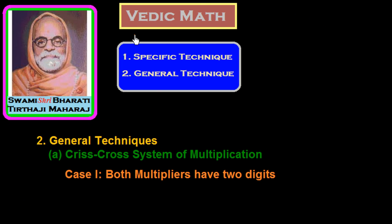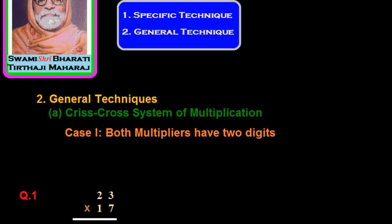Hi friends, in this session of Vedic mathematics we study the general techniques. We study the crisscross system of multiplication. Here we see how we multiply two-digit numbers — the short trick for this.